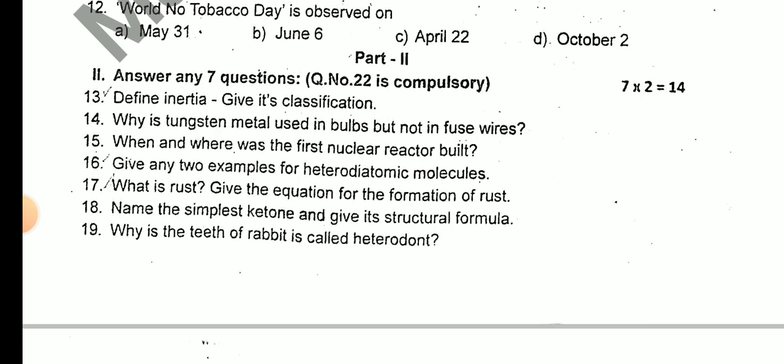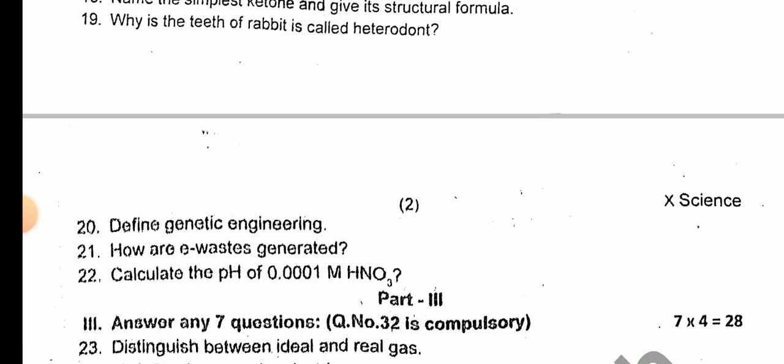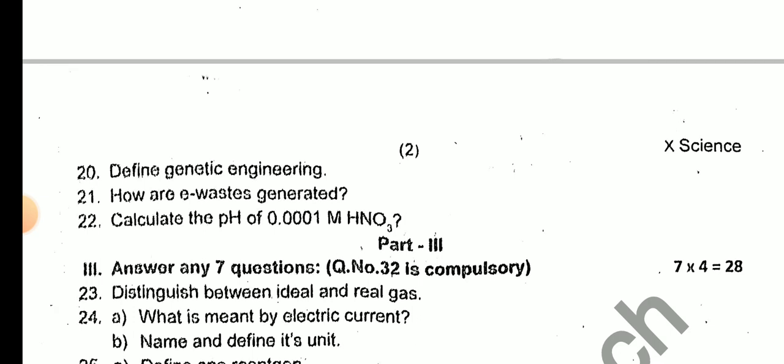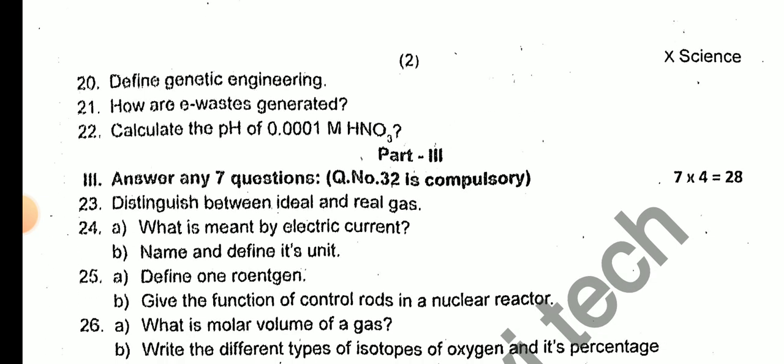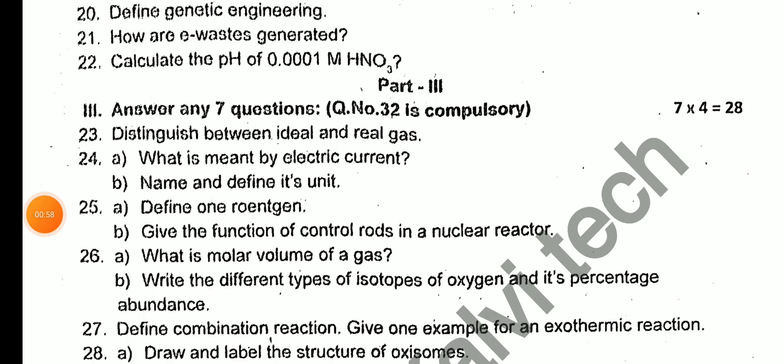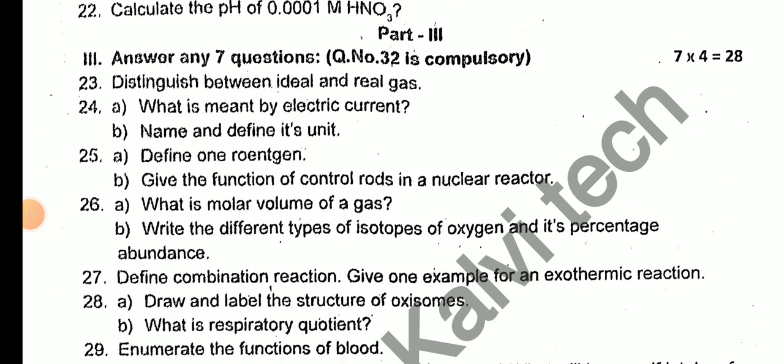Why is a thecodont animal called heterodont? Define genetic engineering. How is e-waste generated? 7 into 428. Distinguish between ideal gas and real gas.